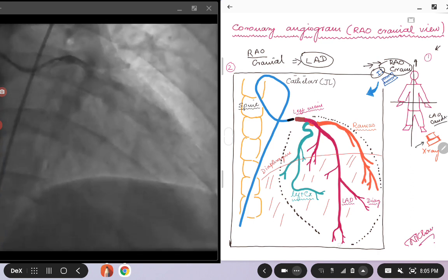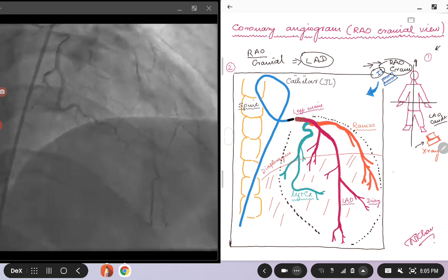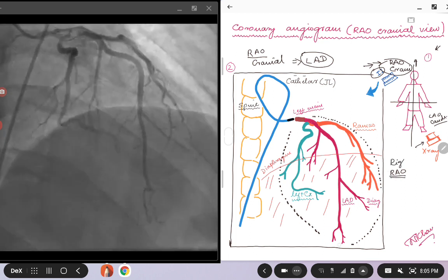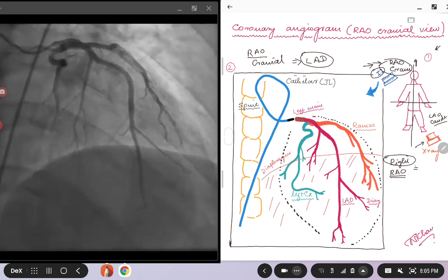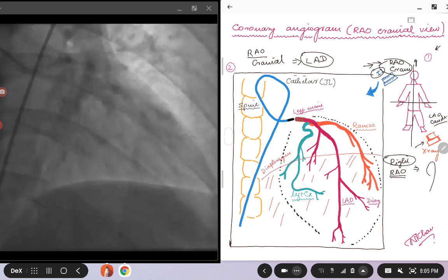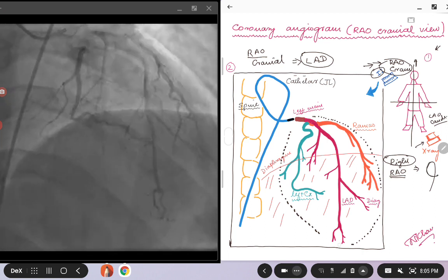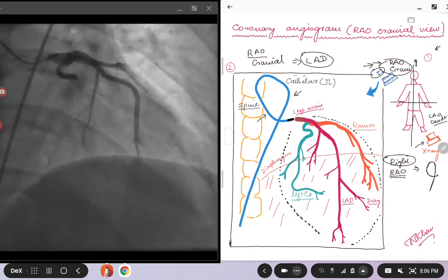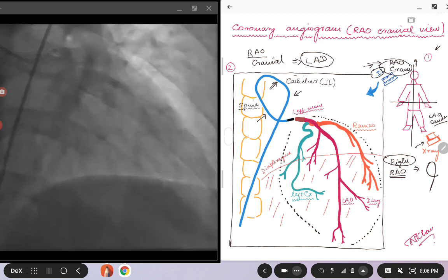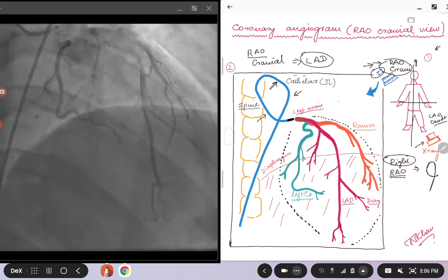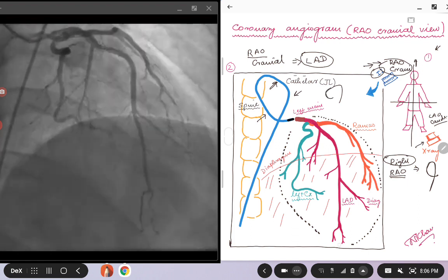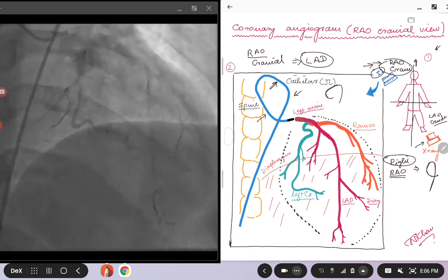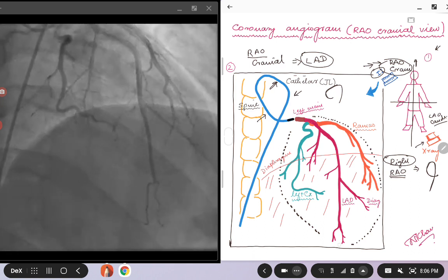We come to the first thing, looking at the catheter. As we talked in the beginning, in the RAO views or basically in the right-sided views, the catheter will be retracted, they will be folded on itself. In this case, if you look at picture two, you see that the catheter is kind of folded on itself, as compared to the LAO views, where most of the time you will see the catheters to be open. This is going to give you a clue that the image you are looking at is mostly the RAO view.